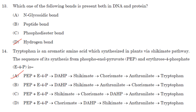Tryptophan is an aromatic amino acid synthesized in plants via the shikimate pathway. The sequence of its synthesis from phosphoenol pyruvate and erythrose-4-phosphate is: PEP plus erythrose-4-phosphate → DHAP → shikimate → chorismate → anthranilate → tryptophan. Answer is option A.